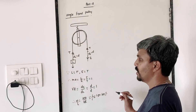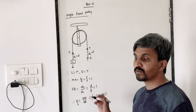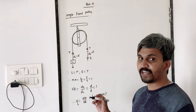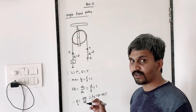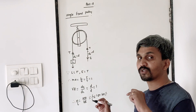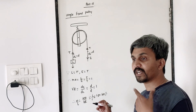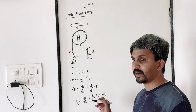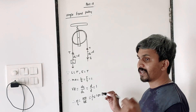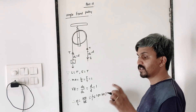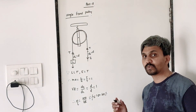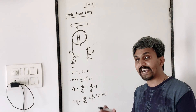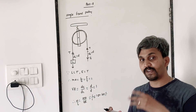This kind of pulley is used to change the direction of effort. This pulley is not doing any kind of force multiplication — it will not act as a force multiplier. It is just used to change the direction of effort.